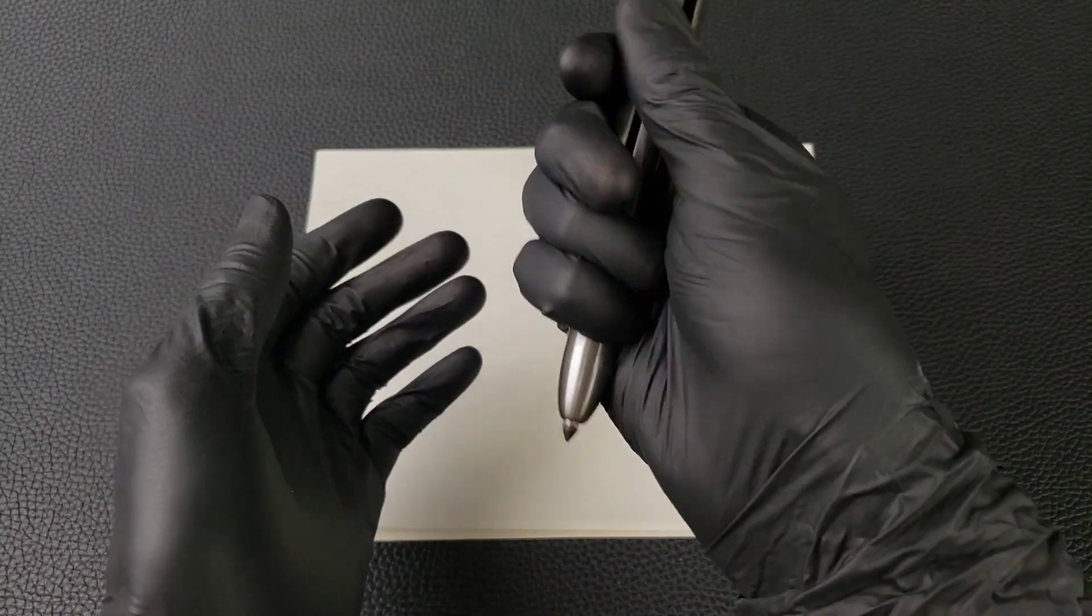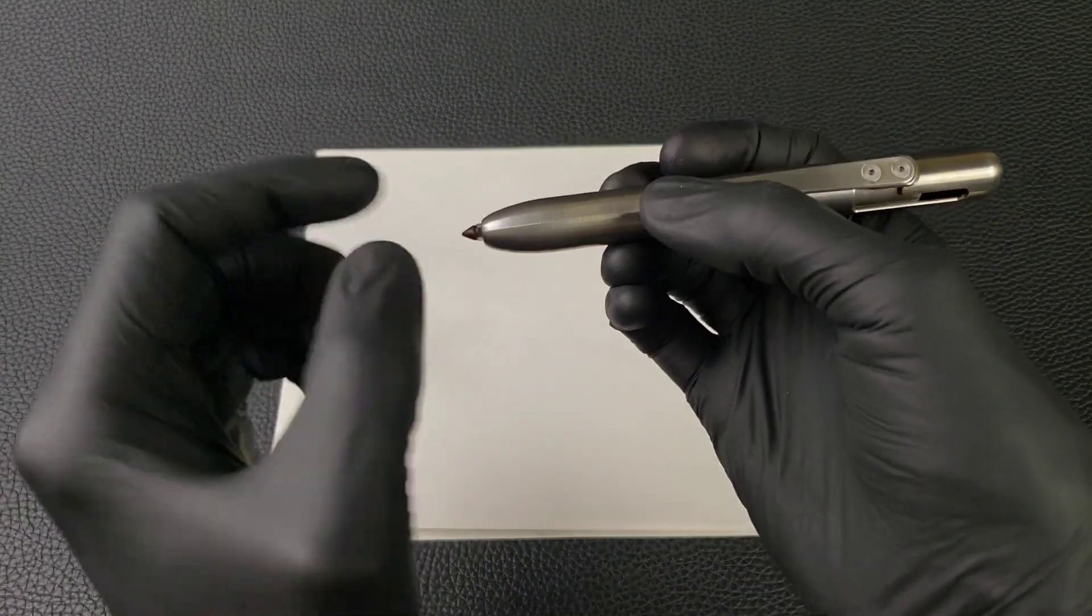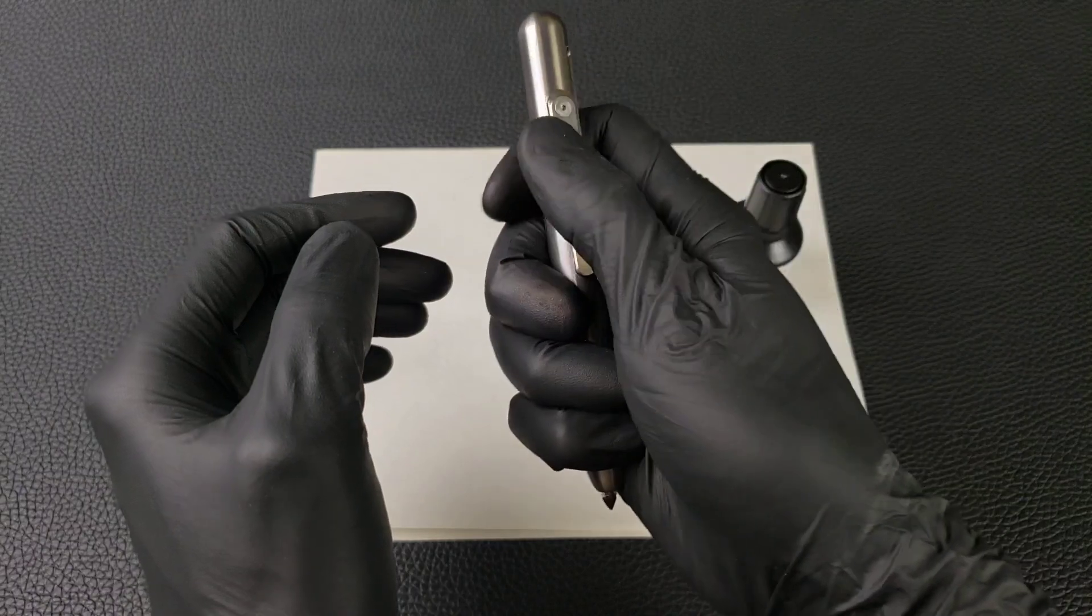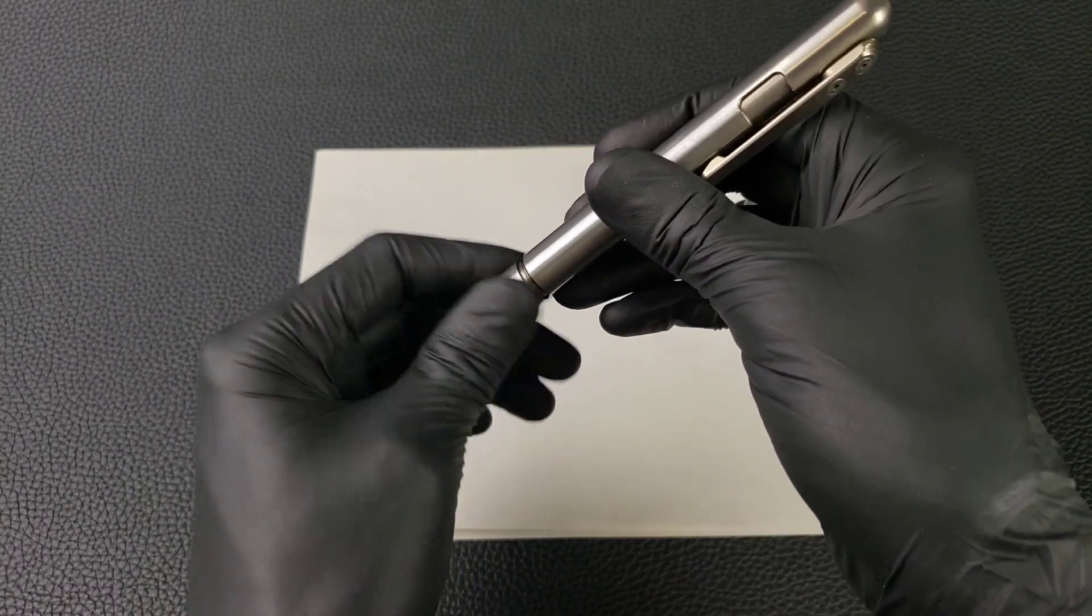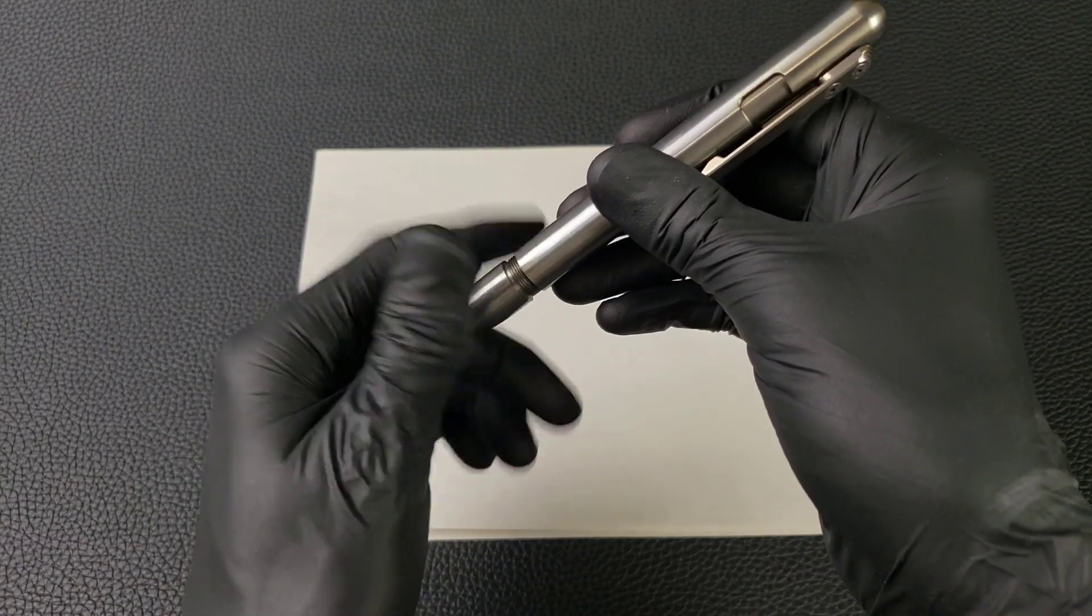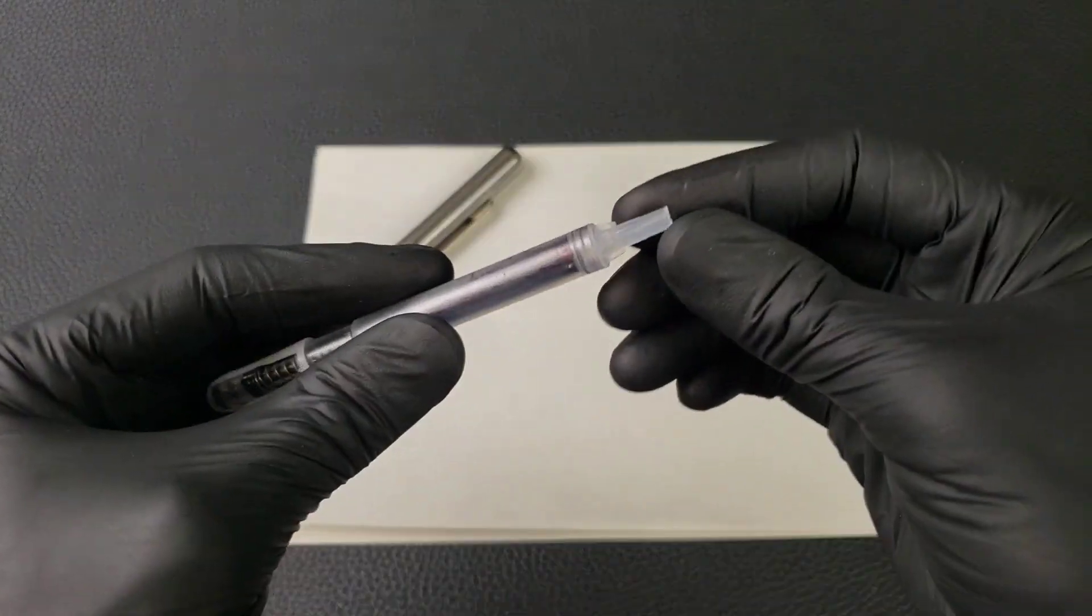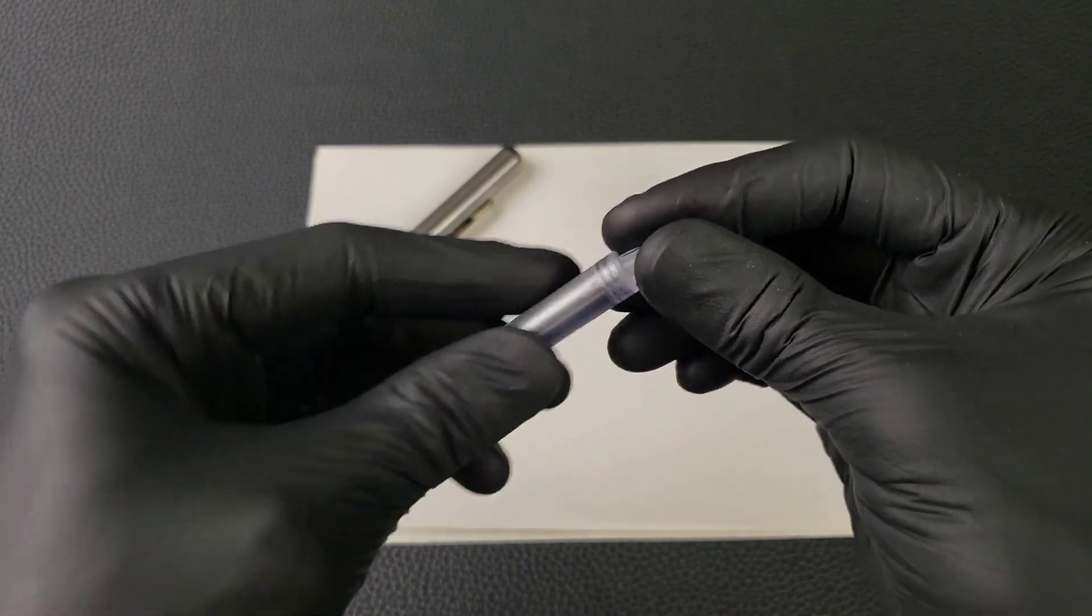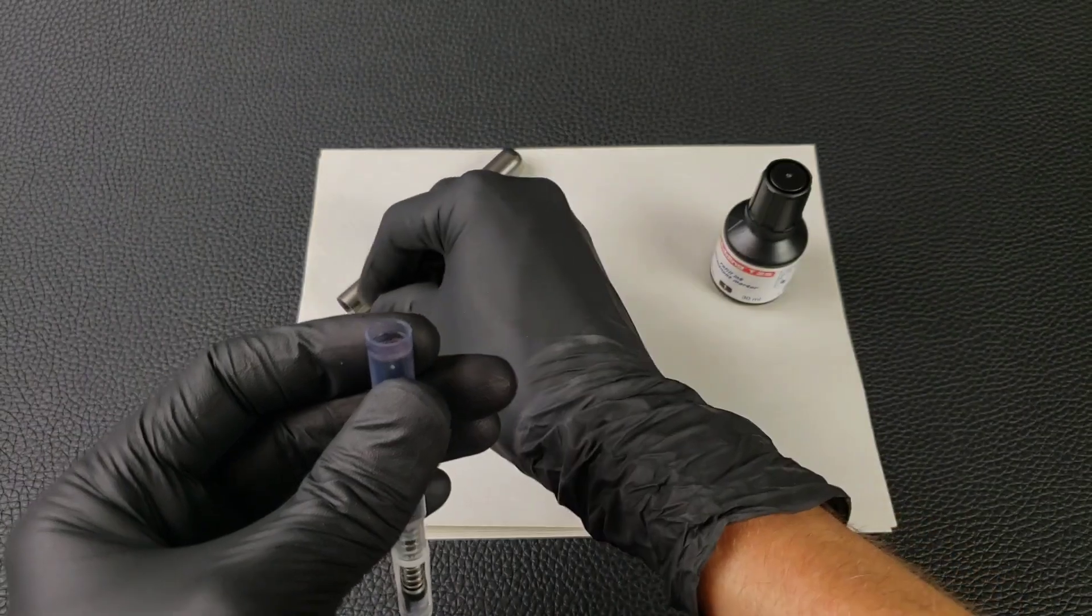As long as your tip is still good, you can continue to use the cartridge until the tip is worn out. The first step is to unscrew the tip. Remove the cartridge, and we're going to pop the cap off the back of the cartridge. That involves just a little bit of leverage to remove it.